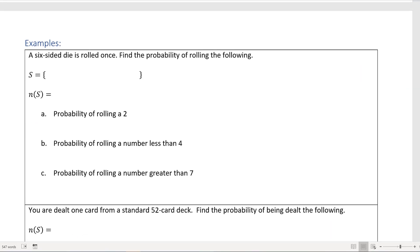For our first example, we have a six-sided die that's only rolled once. So find the probability of rolling the following. My sample space - let's first decide what my sample space is. I could possibly have a 1, 2, 3, 4, 5, or 6 in my sample space. Therefore n(S) is 6.